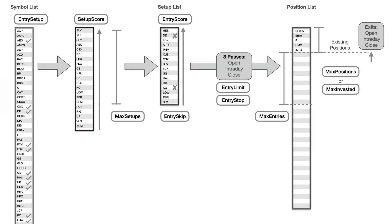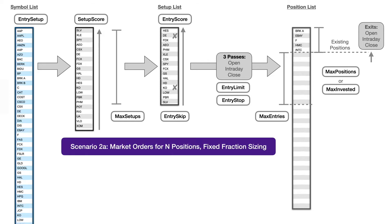This is a very straightforward system. We're using market orders at the beginning of each month for five positions with fixed sizing. We simply need to define an entry setup that decides which stocks qualify, producing a shortlist. We then use an entry score based on the relative strength indicator to sort them, take our maximum of five positions, and we don't need limit orders or anything like that since we're only trading once a month.